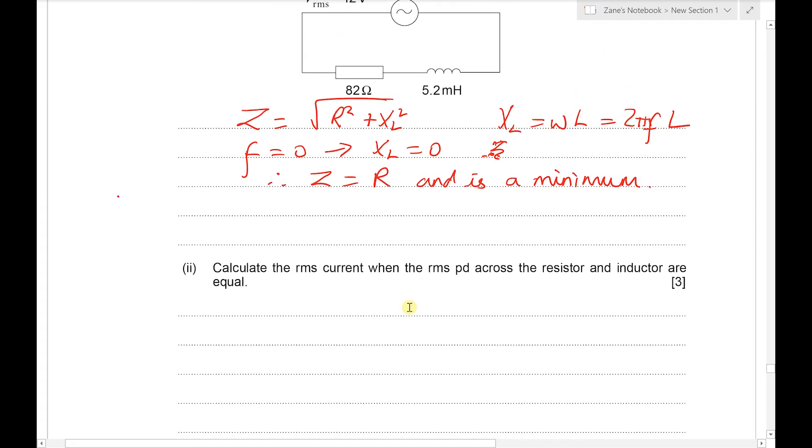Next we've got to calculate the RMS current when the PD across the resistor and the inductor are the same. So taking the same equation Z equals R² plus X_L². If X_L and R are equal then we can say that Z is equal to the square root of 2 times R², or the square root of 2 times 82². Looking at that on a calculator we end up with about 116 ohms.